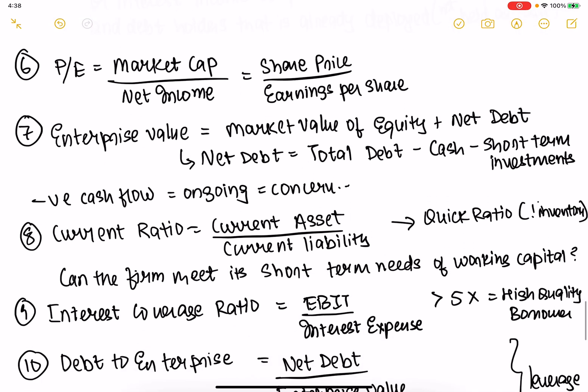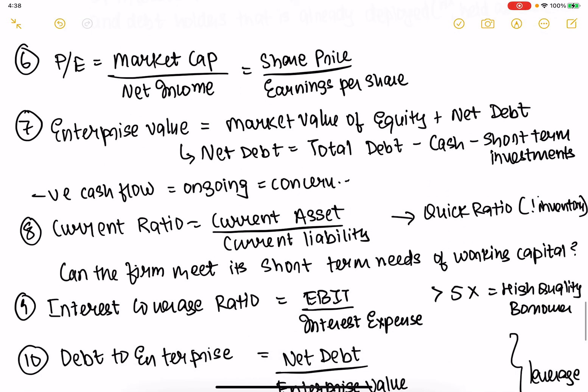ROIC measures how well the company is doing in terms of return on whatever money it has already invested. So that's five metrics. The remaining five: PE — price to earnings — is market capitalization divided by net income, or share price divided by earnings per share.